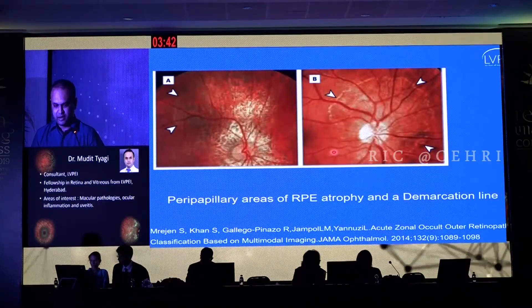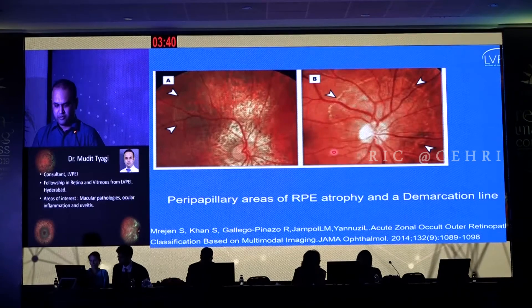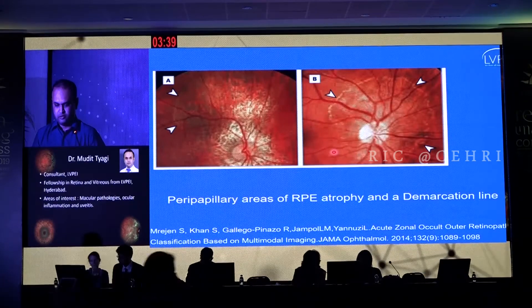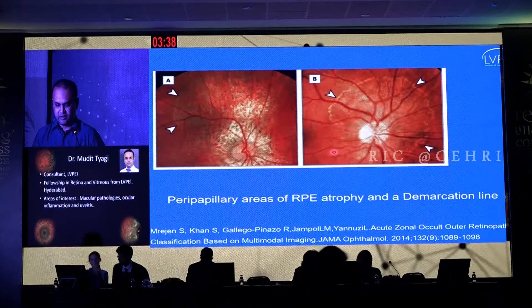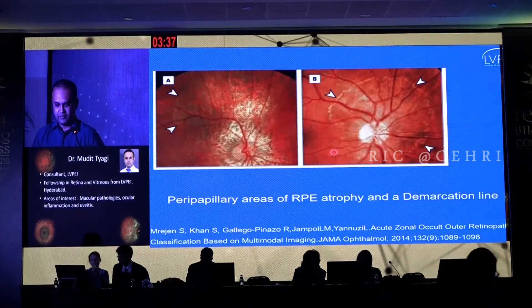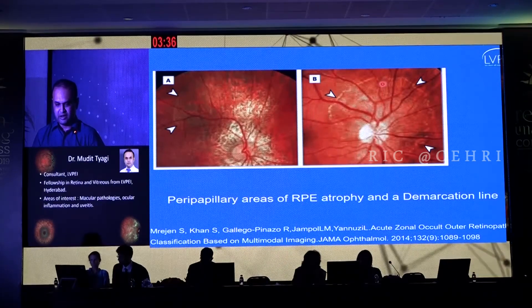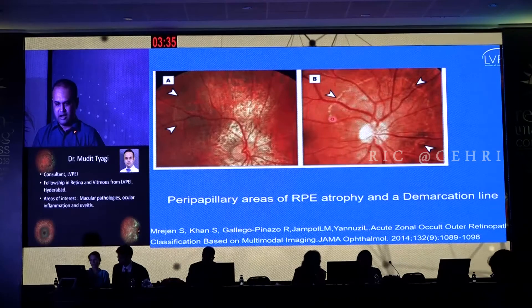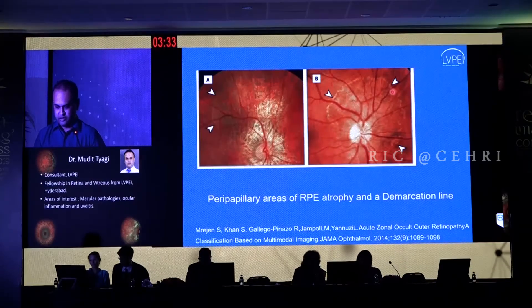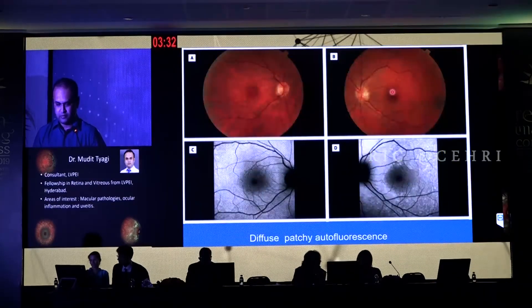Autofluorescence very nicely illustrates these cases with this hyper-autofluorescence and this beaded ring appearance at the margins of the lesion. This has been described very nicely in a paper by Dr. Yannuzzi's group, where they describe peripapillary areas of RP atrophy and something called a demarcation line which can be seen in these patients.